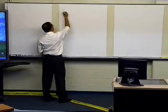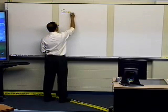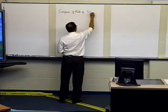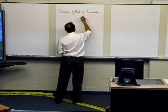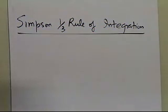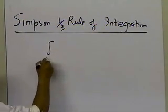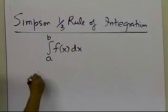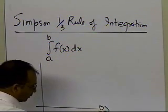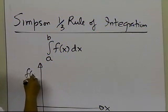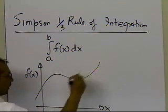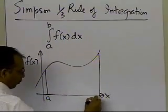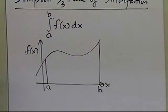In this segment, we're going to talk about Simpson's one-third rule of integration and derive its formula. What we are trying to do is numerically find the value of a definite integral of a function given as a function of x, and find the approximate area under the curve from point A to point B using numerical integration.